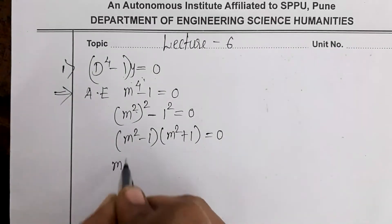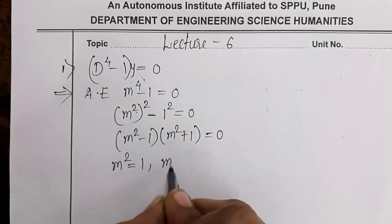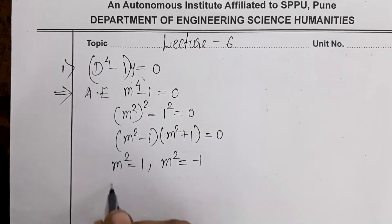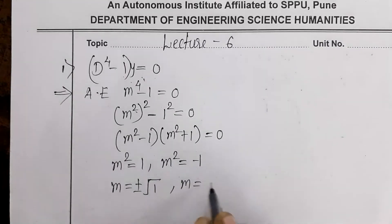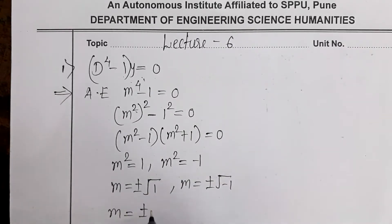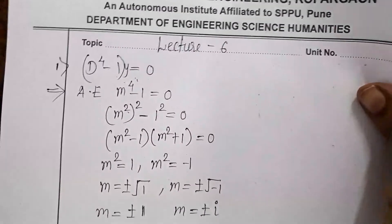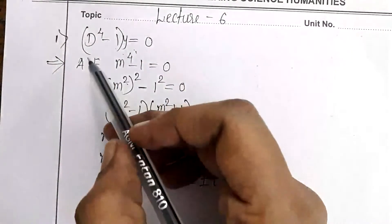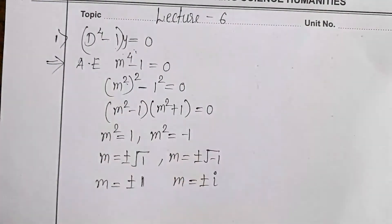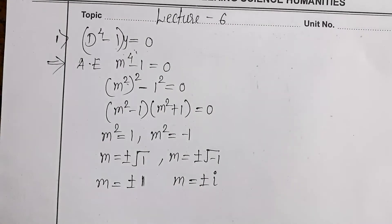From the factors: m² = 1 gives m = ±√1, and m² = -1 gives m = ±√(-1). So m = ±1 from the first, and m = ±i from the second. We got 4 roots: +1, -1, +i, and -i. Always remember: whatever the order of the differential equation, you must get that many roots — order 4 gives 4 roots, order 3 gives 3 roots.